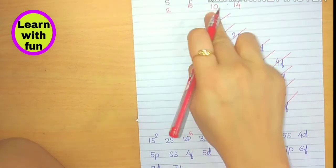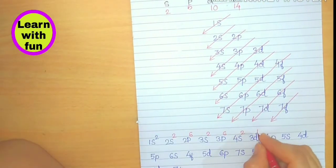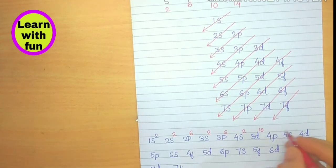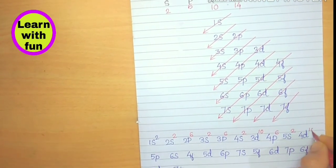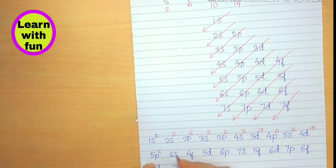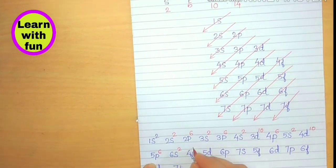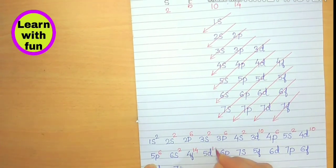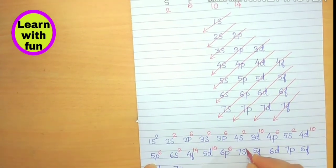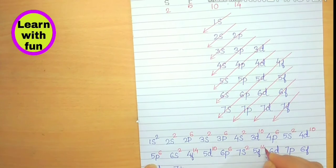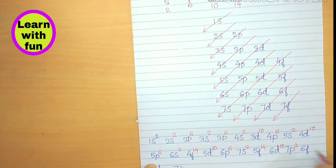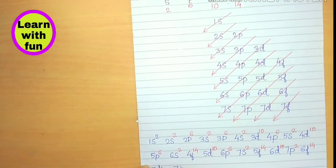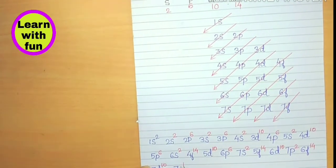D subshell can accommodate 10, so we will write 10 here. P can accommodate 6, 2D10, P6, S2. F14 electrons, so we will write 14, 10, 10, 6, 2, 14. Again 10, P6, F14, D10, and again 14.